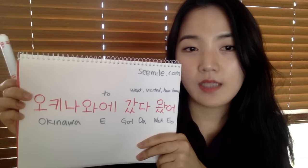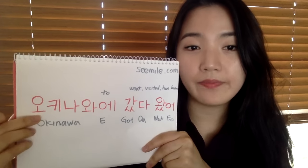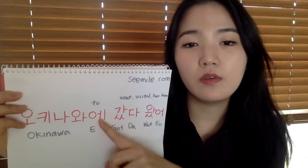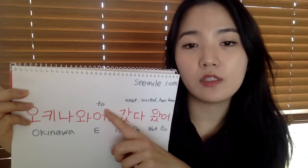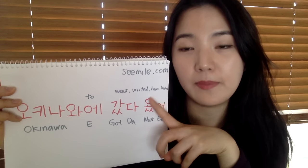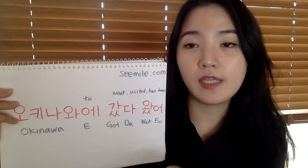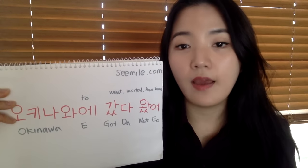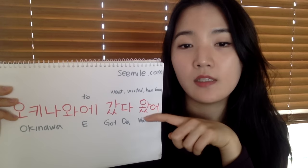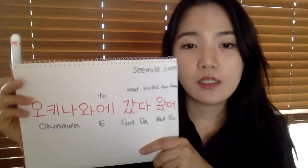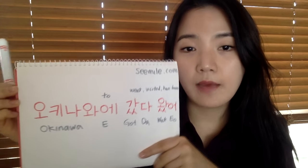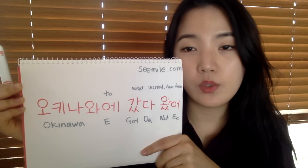As I already told you guys, Okinawa — it's in Japan — so 에 is a particle, which is just the same as 'to.' And 갔다 왔어 means 'I have been to,' or 'went to,' or 'visited.' It's like I went there and then came back — all past tense. 갔다 왔어. So, 오키나와에 갔다 왔어 — the full sentence means 'I've been to Okinawa.'